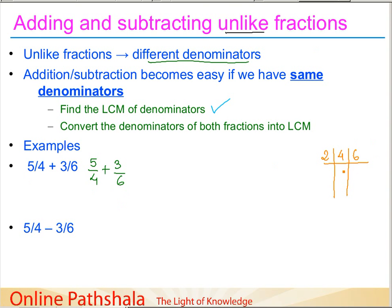The first factor is two: two times two is four, two times three is six. We still have a two in this row, so we write two again: two times one is two, three remains as it is. Then next we have three: one remains as it is, and the other becomes three. So the LCM of four and six is two times two times three, which is twelve.